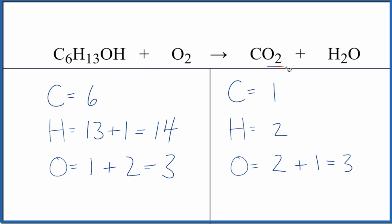On the product side, you have the 2 oxygens here and then the 1 here. So 2 plus 1 is 3. Make sure you get those right or you will have problems.